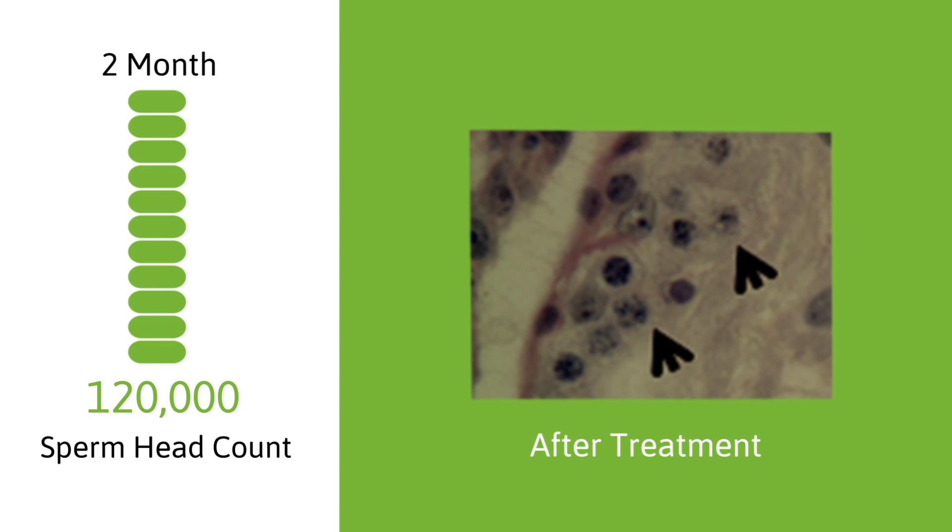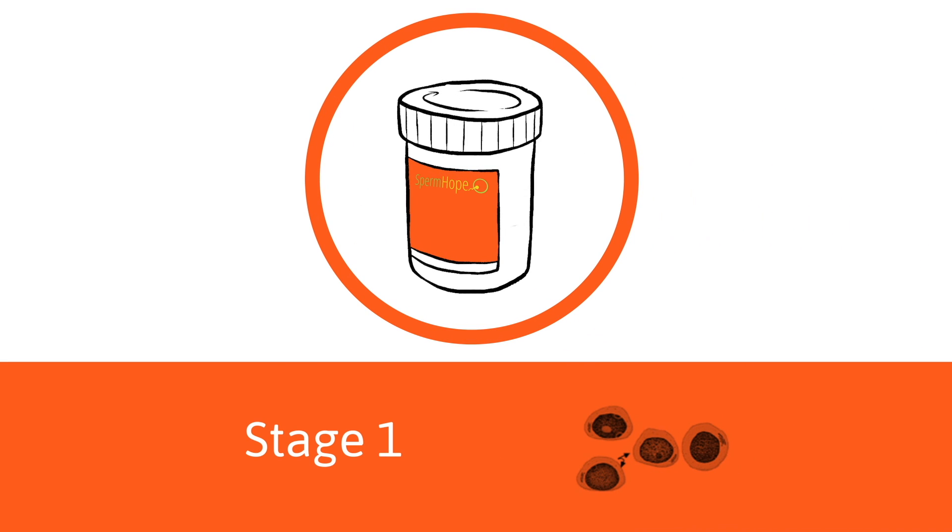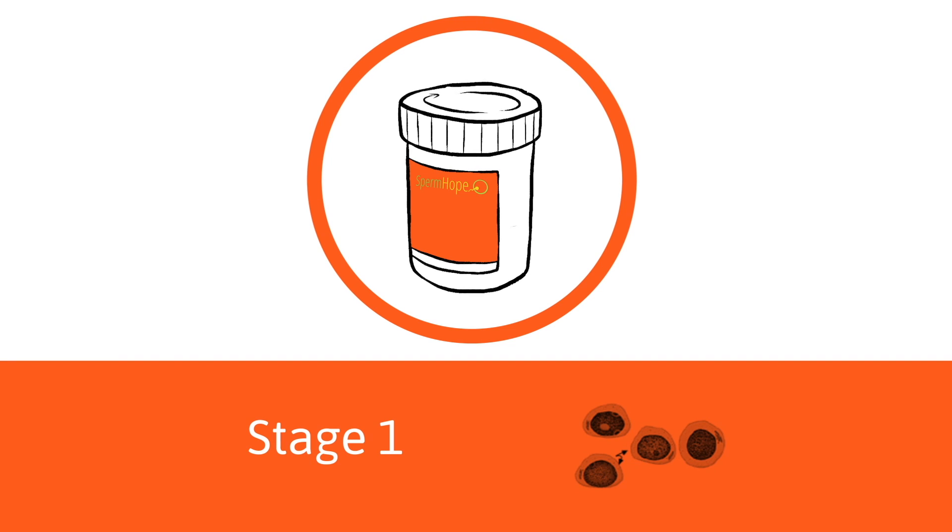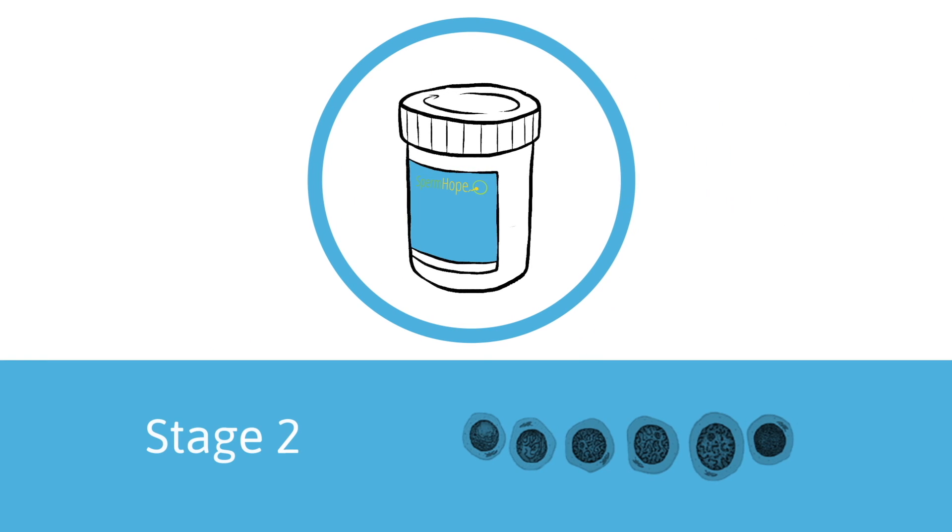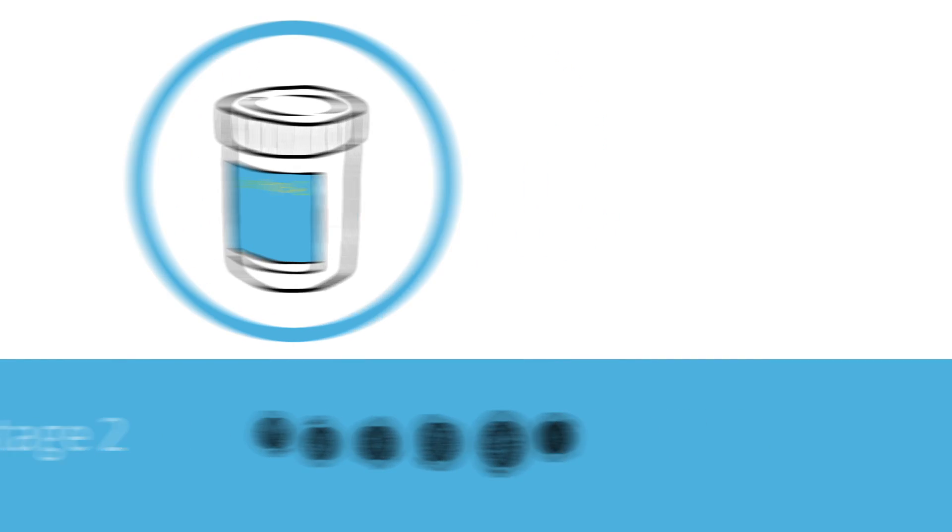SpermHope treatment has three stages. Stage one increases the number of spermatogonia stem cells by slightly reducing the testosterone level. Stage two increases the number of cell divisions in the early stages. Stage three is the final stage and it increases the number of sperm cells.